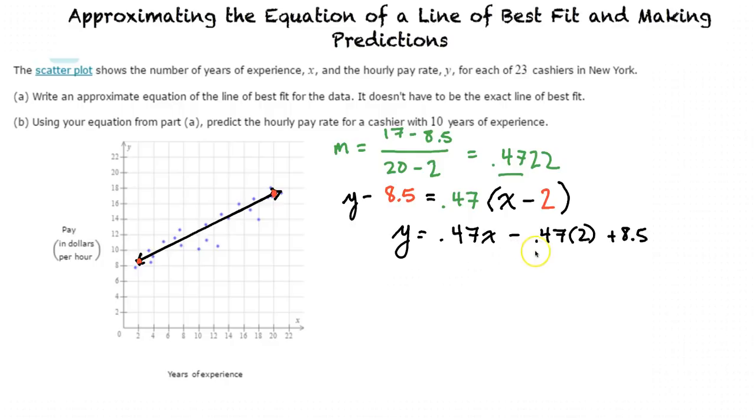After multiplying the negative 0.47 times the 2 and adding the 8.5 together and doing our final simplification, our final equation is y equals 0.47x plus 7.56, and this is our final equation for our line of best fit and our answer for part A.